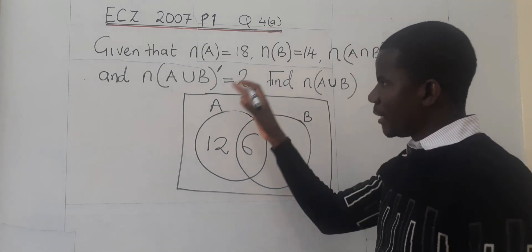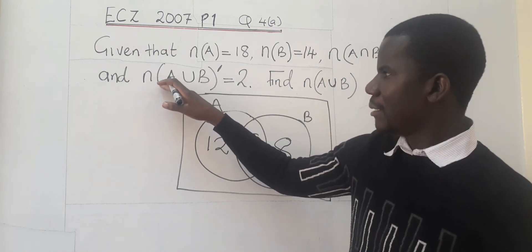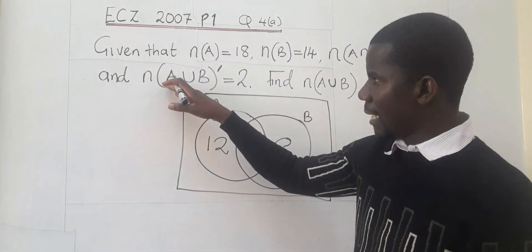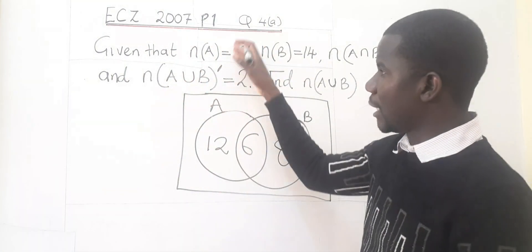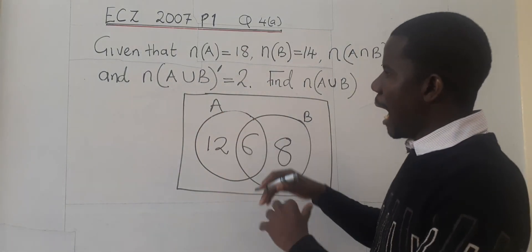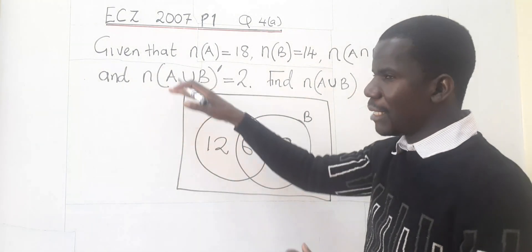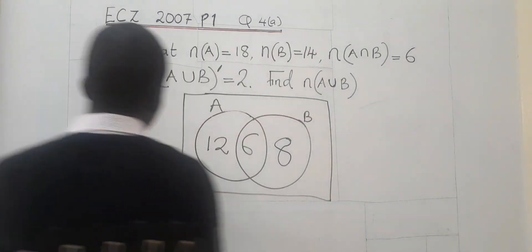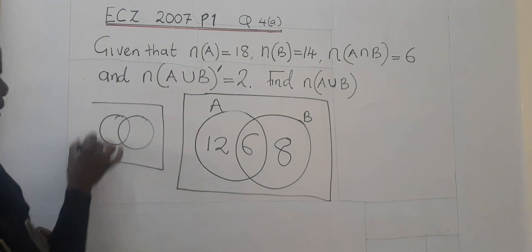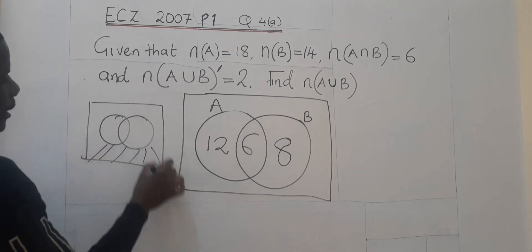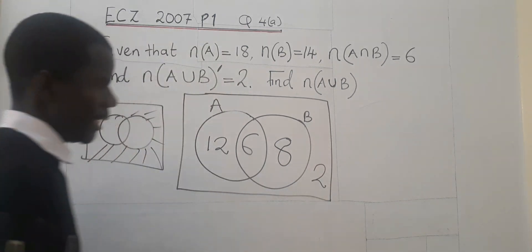The question is not yet done. And then we are talking that the number of elements that are outside, because we have got A union B enclosed in the brackets, then outside we have got a complement. So this means outside of A and B, outside of A or B. The area that we are talking about here is this one. Outside here, there are two.